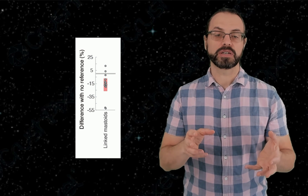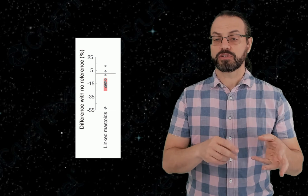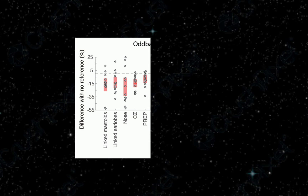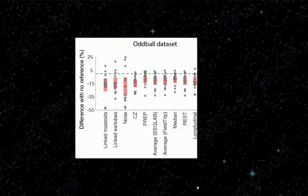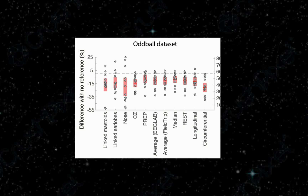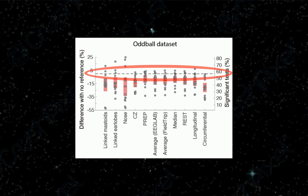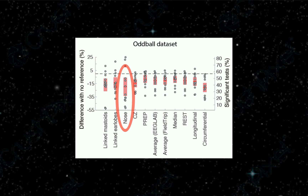This is a special experiment because the data was recorded with many different types of reference, including nose and earlobes, to check for the effect of re-referencing. We have, in order from left to right: linked mastoid, linked earlobes, nose, electrode CZ, the robust re-referencing method in the PREP pipeline, two average references computed using EEG Lab or FieldTrip, the median, the REST infinity reference, and the longitudinal and circumferential bipolar montage. The surprising fact is that these are all significantly below zero — the standard error does not overlap with zero, so a parity test would be significant. The nose reference is the worst and shows extreme changes compared to the hardware reference.